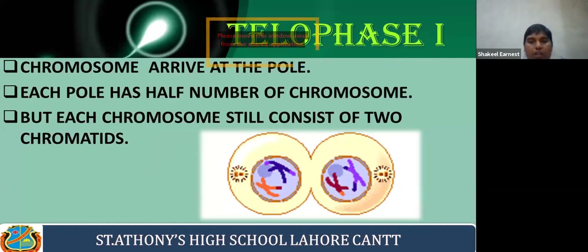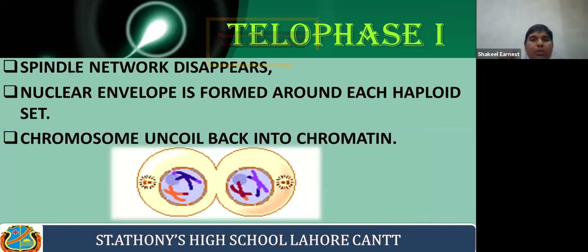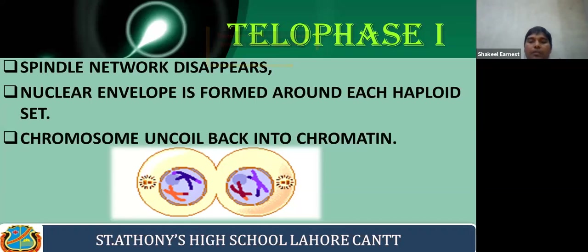The next phase is telophase one. In telophase one, chromosomes arrive at the opposite poles. Each pole has half the number of chromosomes, but each chromosome still consists of two chromatids. The spindle networks disappear, nuclear envelopes start to reform, chromosomes are enclosed within the new nuclear envelopes, and then the chromosomes uncoil and uncondense — the chromatin material relaxes. Telophase is essentially the reverse of prophase.